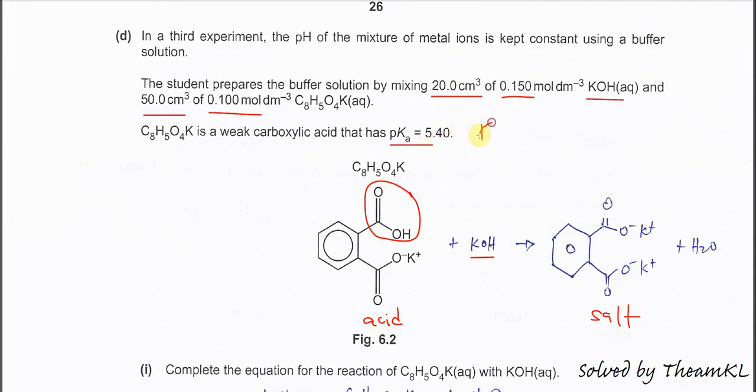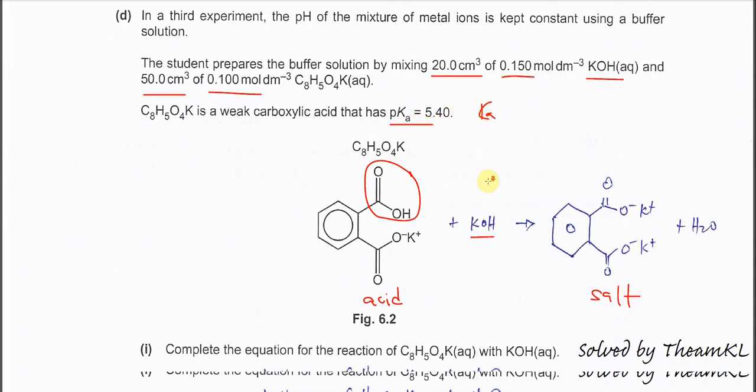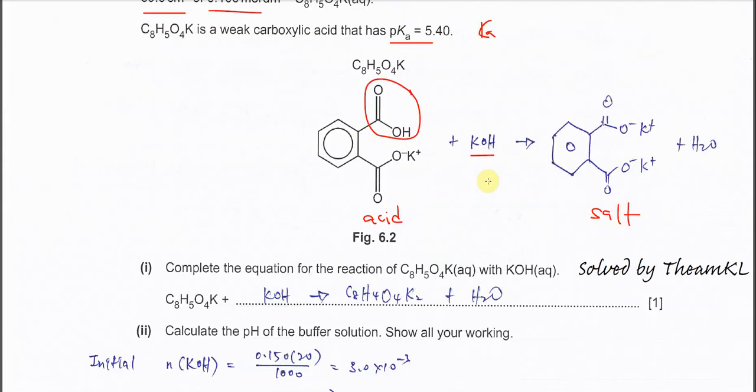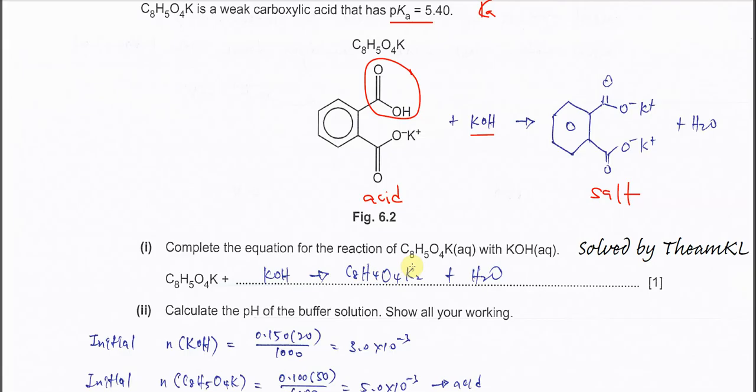Now complete the equation for the reaction of C8H5O4K with KOH. So very easy, you just put this one plus KOH, then it will form C8H4O4K2 plus H2O. Remember to put this H2O.